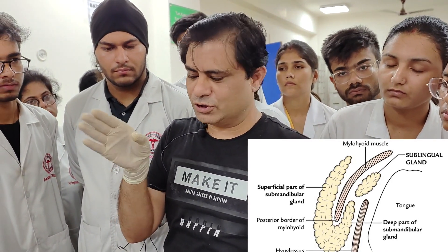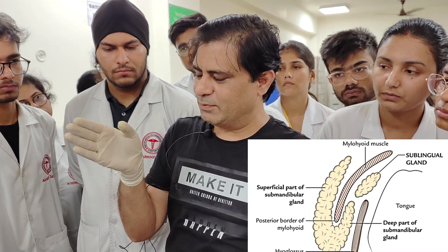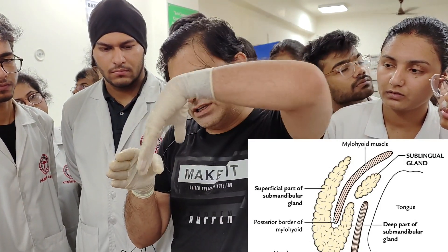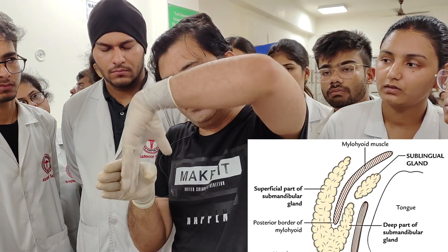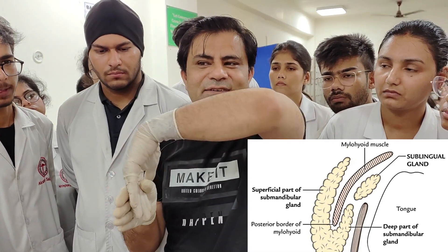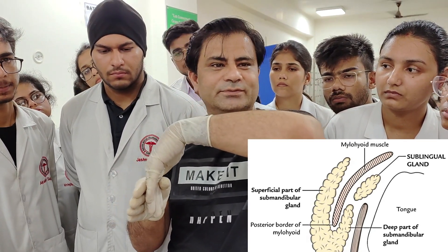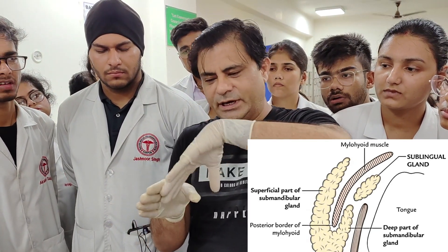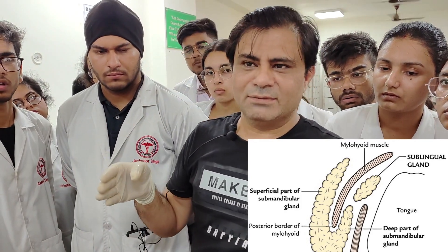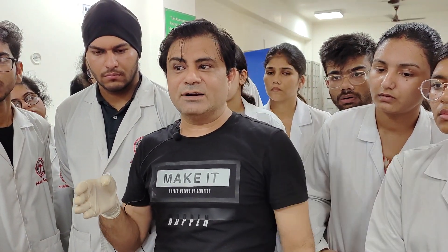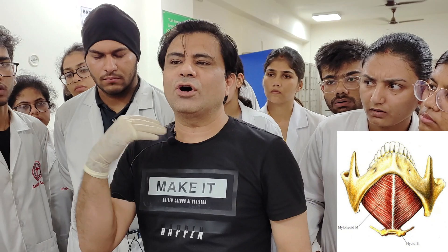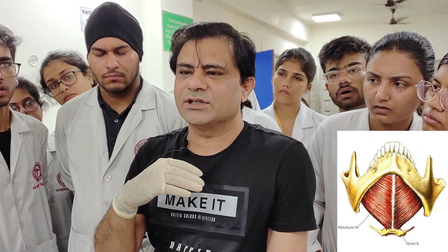Another gland which is J-shaped is the submandibular gland. It also has a major superficial portion — the bigger portion — and a smaller deeper portion. There is a muscle indenting in between them. Which muscle indents this submandibular salivary gland?